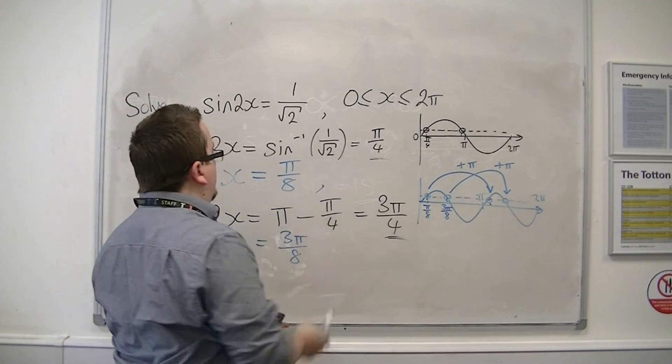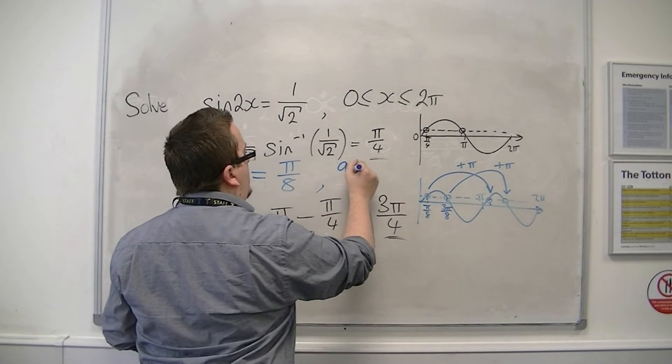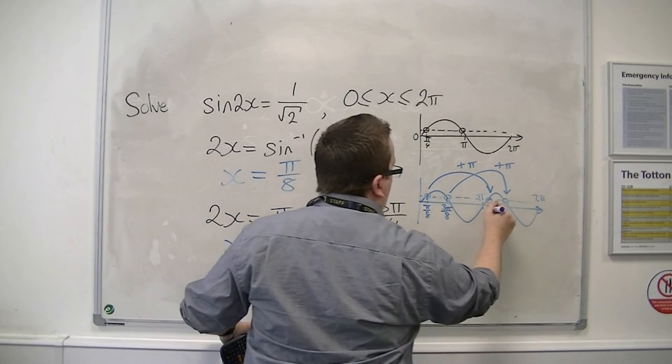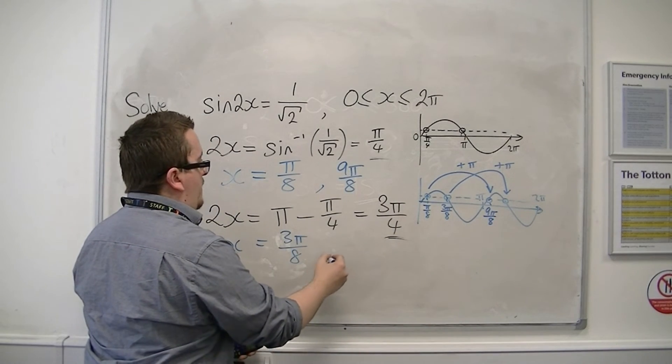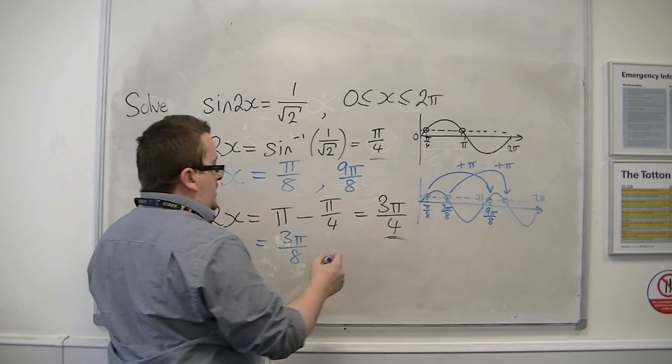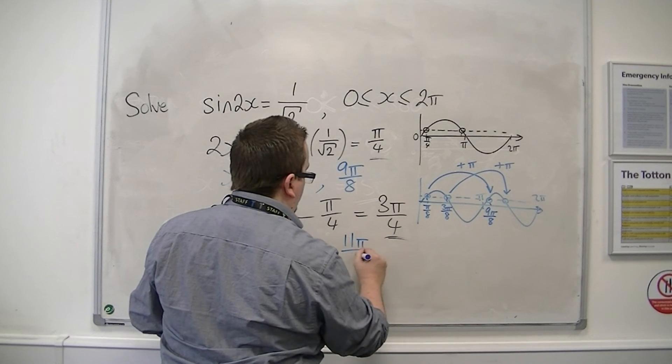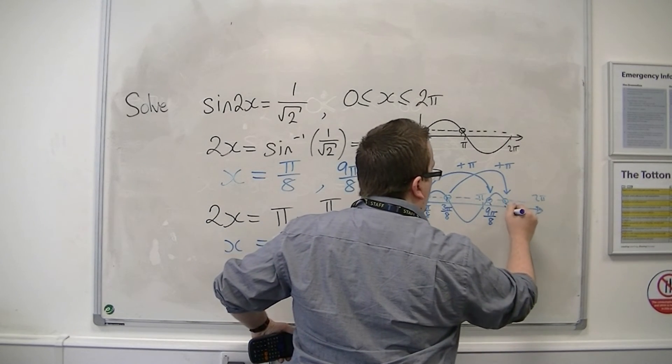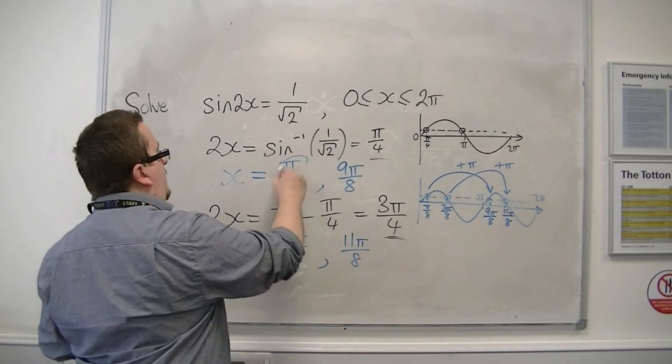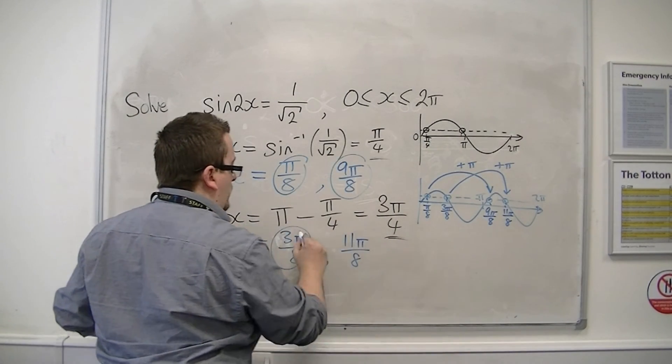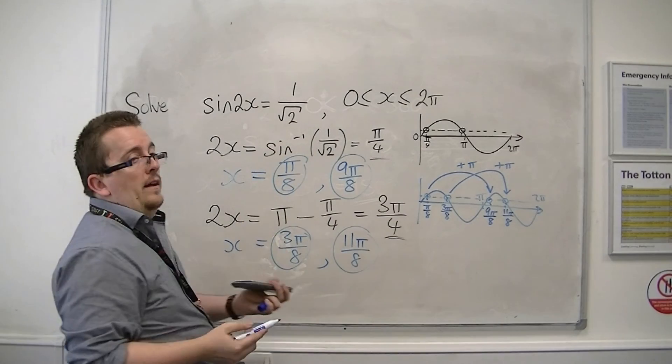So if I add pi to pi over 8, I get 9 pi over 8. And if I add pi to 3 pi over 8, I get 11 pi over 8. And these are my four solutions to that equation.